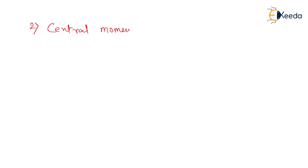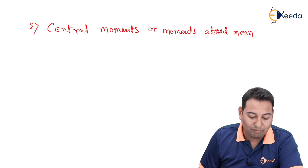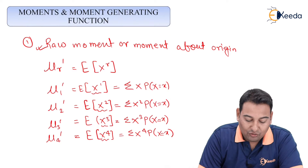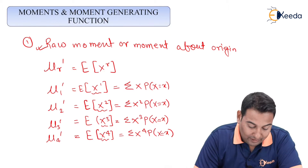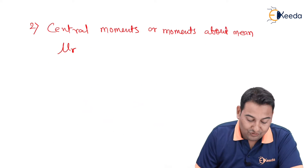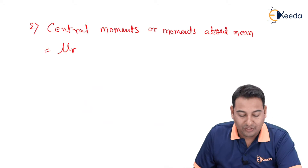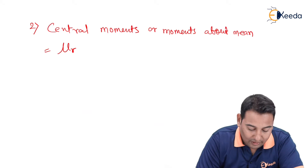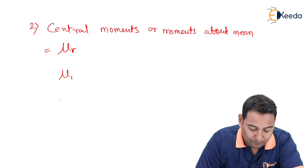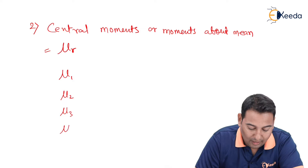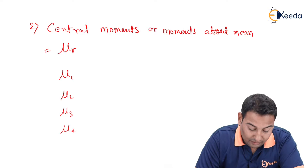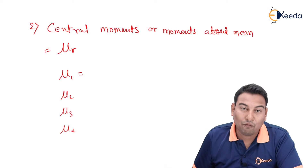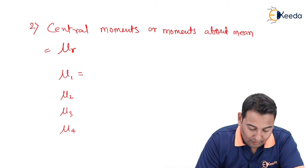The second point is central moments, or moments about mean. Central moments are represented by mu r — without a dash. If it has a dash it is a raw moment; without a dash it is a central moment. We will find four central moments: mu 1, mu 2, mu 3, and mu 4, all without dash.